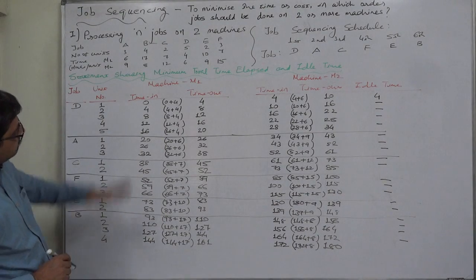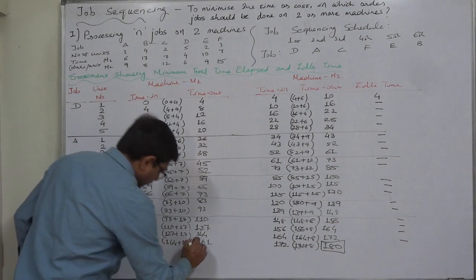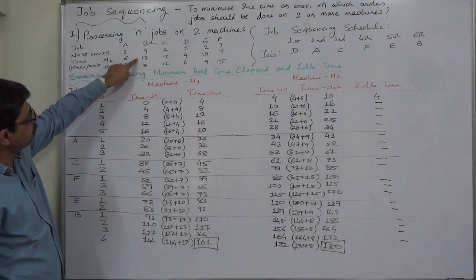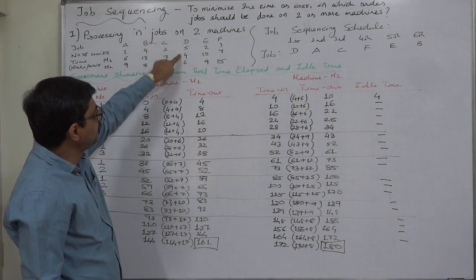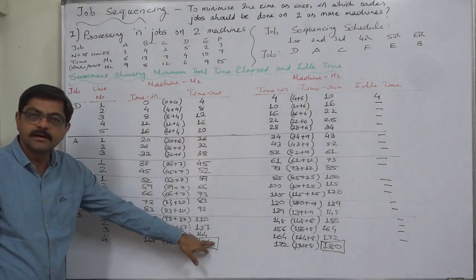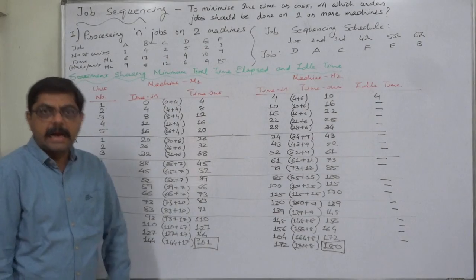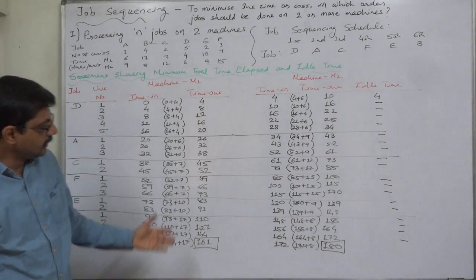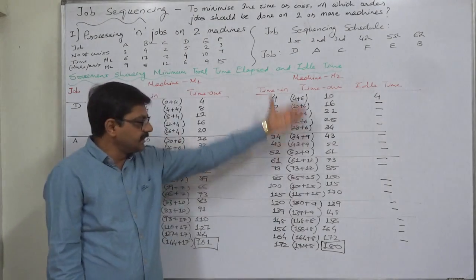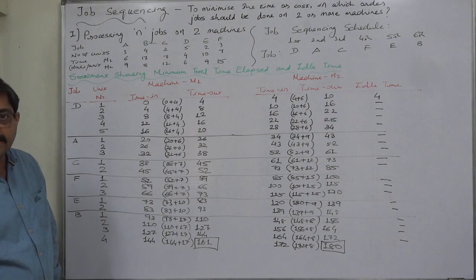The total time on machine 1 is 161. Verification: 3×6=18, plus 4×17=68, plus 2×7=14, plus 5×4=20, plus 2×10=20, plus 3×7=21. Total comes to 161, confirming our working on machine 1 is correct. On machine 2, we took utmost care in selecting the time in and adding processing time for time out, so we are also sure machine 2 entries are correct.